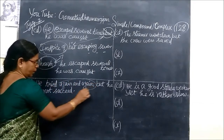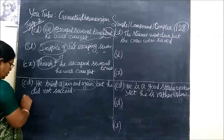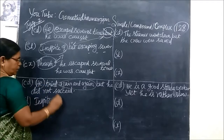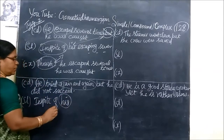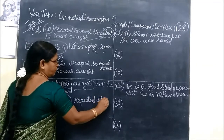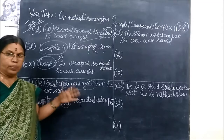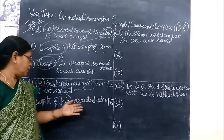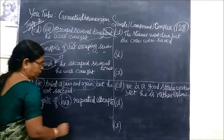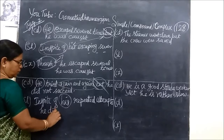See the next one: He tried again and again. The phrase 'again and again' refers to a repeated action. So using simple, we are writing: In spite of his repeated attempt, he did not succeed.